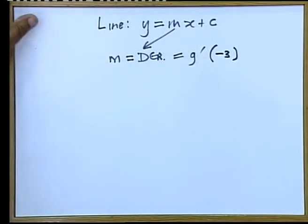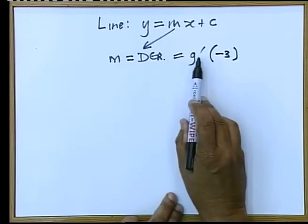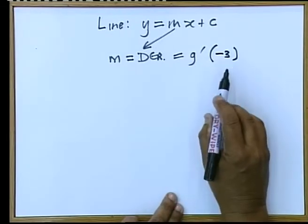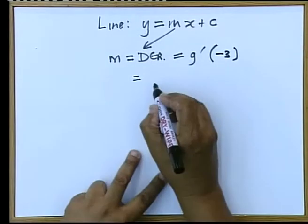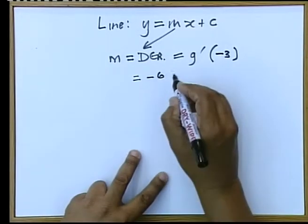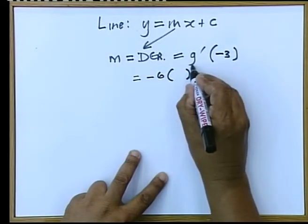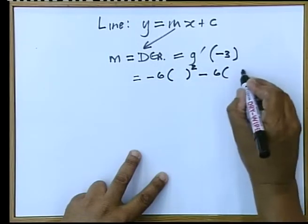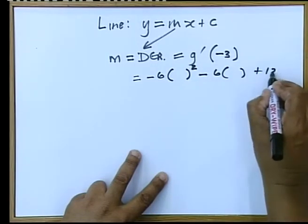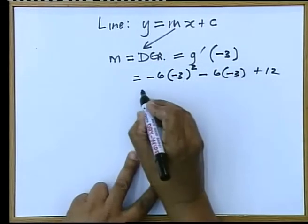So let's just see what needs to be done. If we now take the derivative at negative 3, it means we're going to plug into the previous equation that we just worked with in 9.2, minus 6 times the X value squared, minus 6 times the X value plus 12, and we have just mentioned that that X value is negative 3.